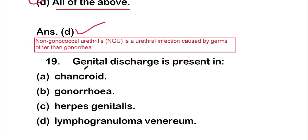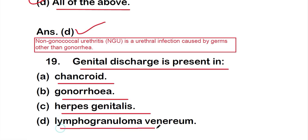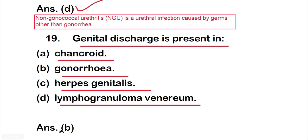Question 19: Genital discharge is present in — option A: chancroid; option B: gonorrhea; option C: herpes genitalis; option D: lymphogranuloma venereum. The right answer is option B: gonorrhea.